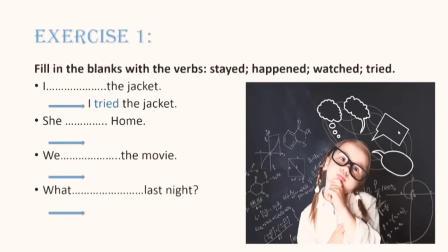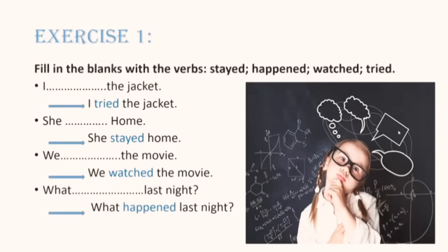How about the second one? She and we have home. Which verb do you think? Stayed, happened, watched, which one? Now you know. Good. Stayed. She stayed home. Now the third sentence, we the subject, the movie. This one is very simple and easy. Good. Watched the movie. And now the last one is an easy one because you only have the last verb, the verb happened. What happened last night? This is a question. Excellent work, guys.